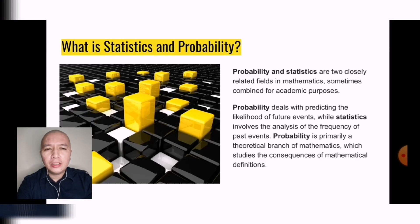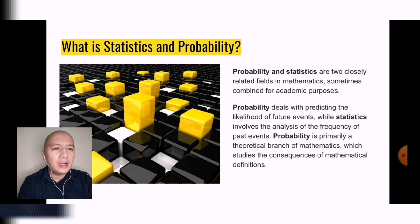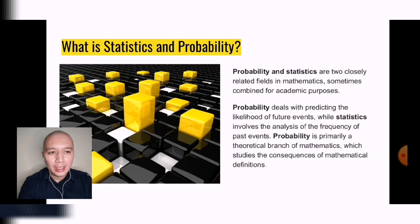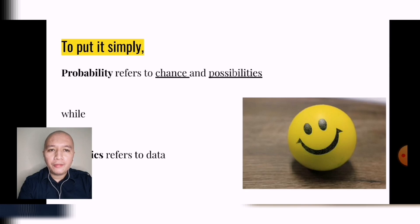First, we have to understand the difference between statistics and probability, because the two terms are closely used and sometimes interchanged. Probability and statistics are closely related fields in mathematics and are sometimes combined for academic purposes. Probability deals with predicting the likelihood of future events, while statistics involves the analysis of the frequency of past events. Take note of those two differences — probability deals with the future, while statistics involves the past. Probability is primarily a theoretical branch of mathematics which studies the consequences of mathematical definitions.